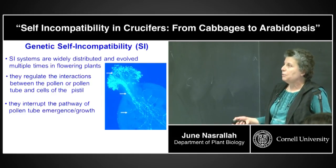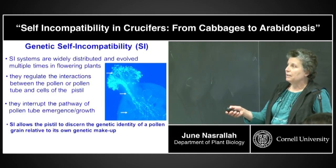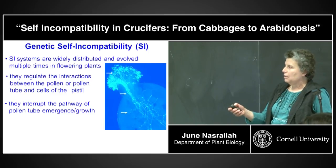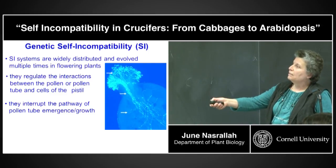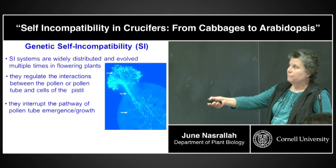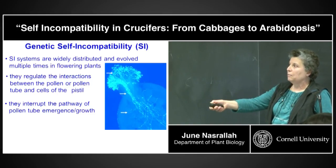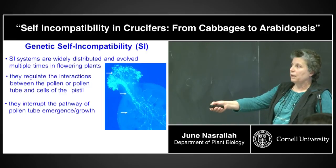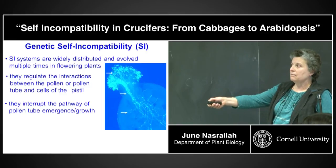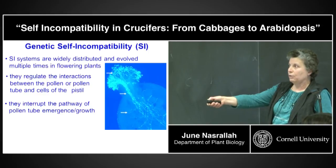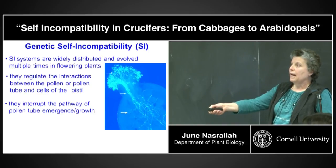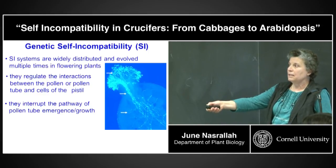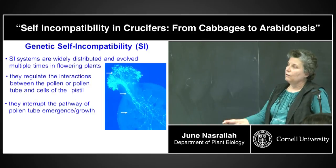In some plant species, self-incompatibility is manifested at the surface of the stigma, as I'll show you for the Brassicaceae family. In other families, the incompatibility response is manifested in the style where pollen tubes are inhibited, and in some cases even in the ovary.